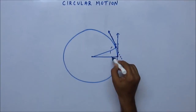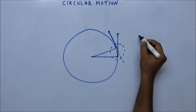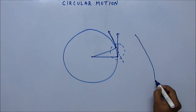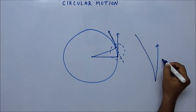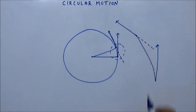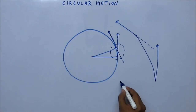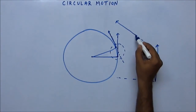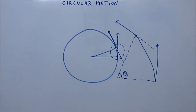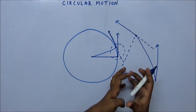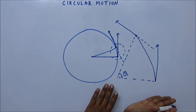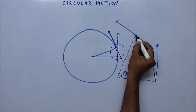Now let us zoom this section. The first velocity vector is like this and the latter velocity vector is like this. Suppose it covered a small angle theta — this is a very small angle, I'm showing you an enlarged view. After covering an angular distance of theta, the particle came here.